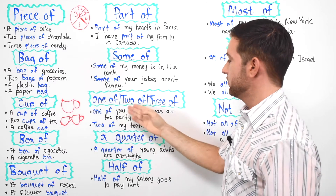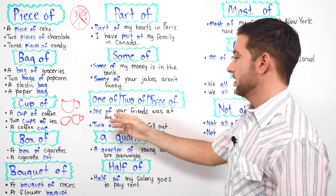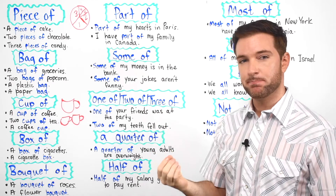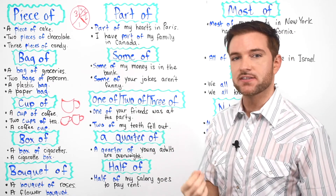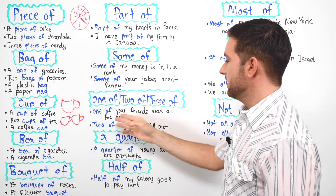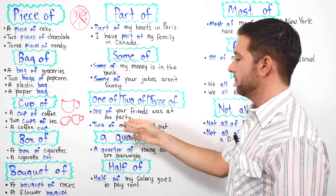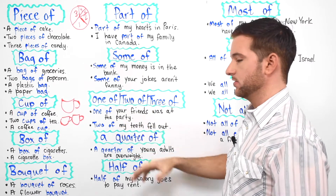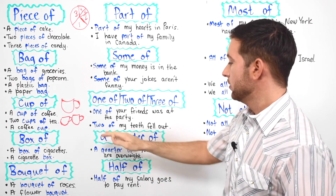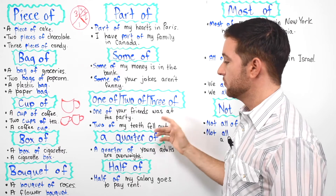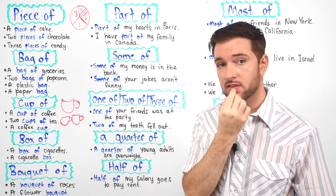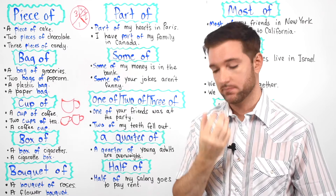Now we're going to talk about things that are a little bit different. We have "one of," "two of," and "three of" — so we're talking about how many, specifying more or less the number. One of your friends was at the party, so you have a group of friends and one of them was at a party. Two of my teeth fell out — so how many specifically? Two of your teeth fell out.